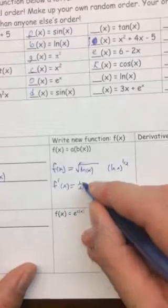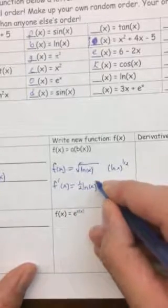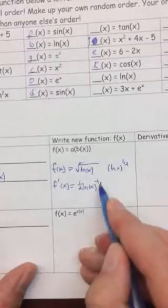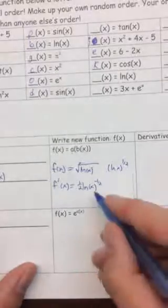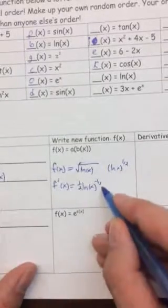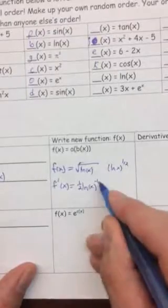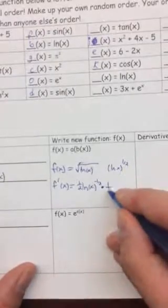Okay, so it's going to be one-half natural log of X to the negative one-half. So we multiply by the power, lower the power by one. And then with the inside function still inside of it, times the derivative of the inside function.